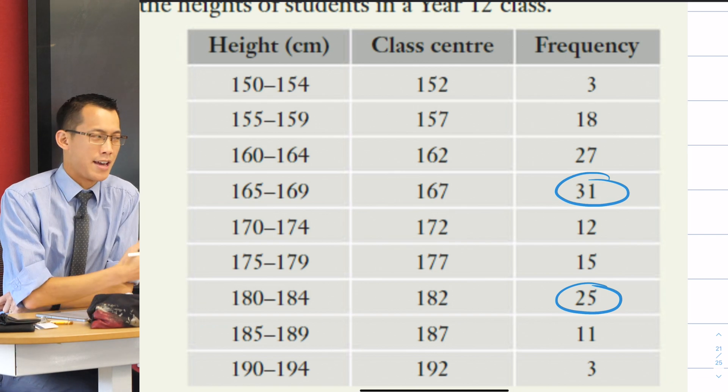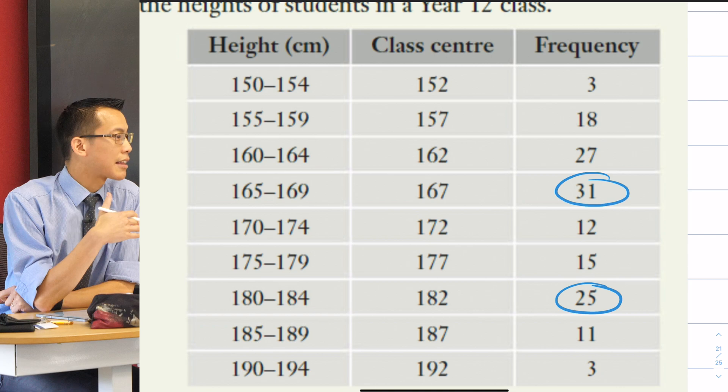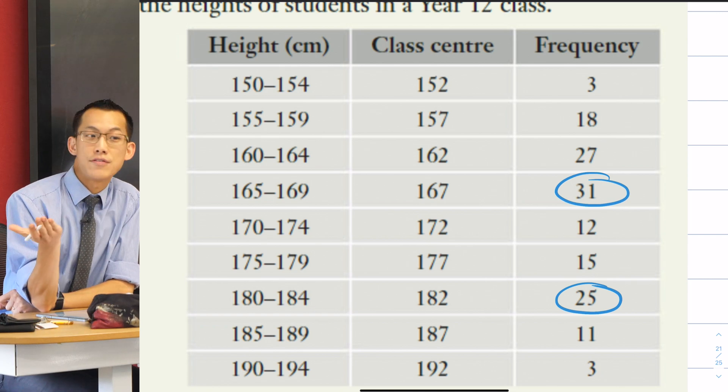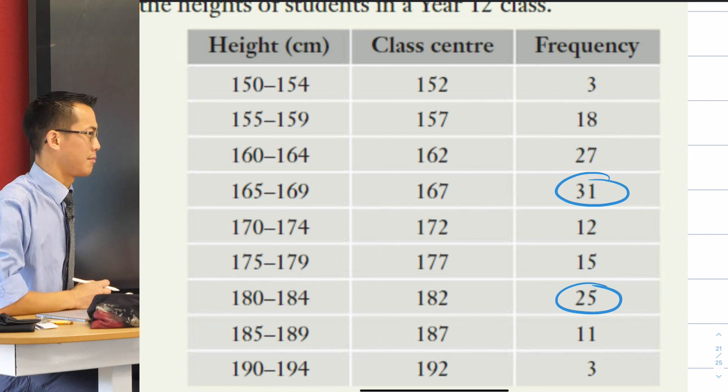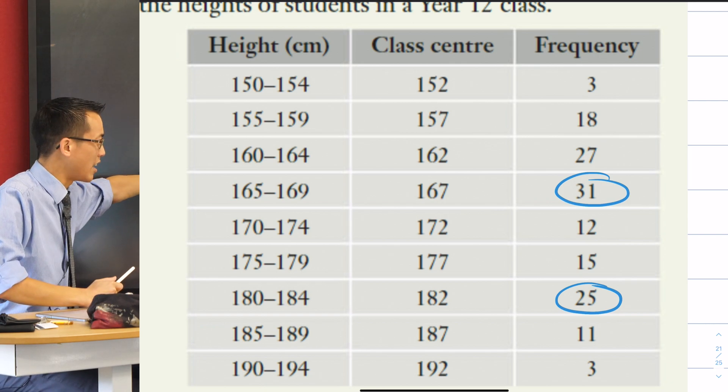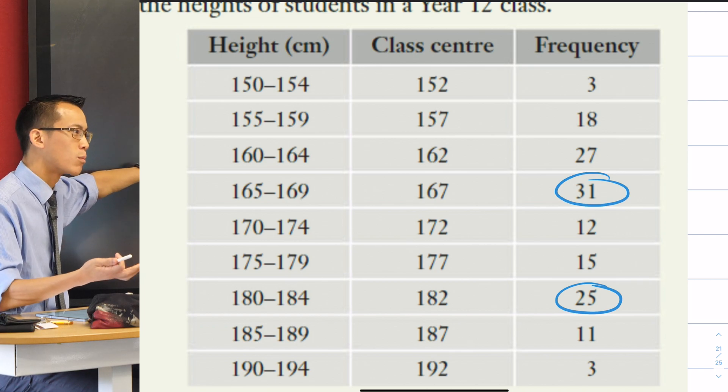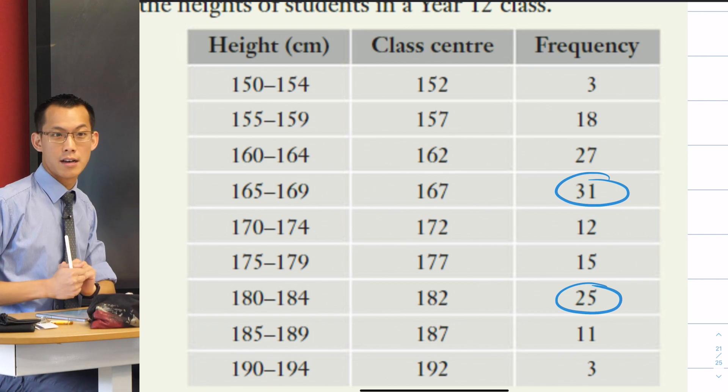Now, this is important to know because we said, look, if it's bimodal, something like the mean or the standard deviation is much less meaningful - get it, meaningful - because the mean is like in the middle here. It doesn't represent any group of people at all, at least in this particular set of data.